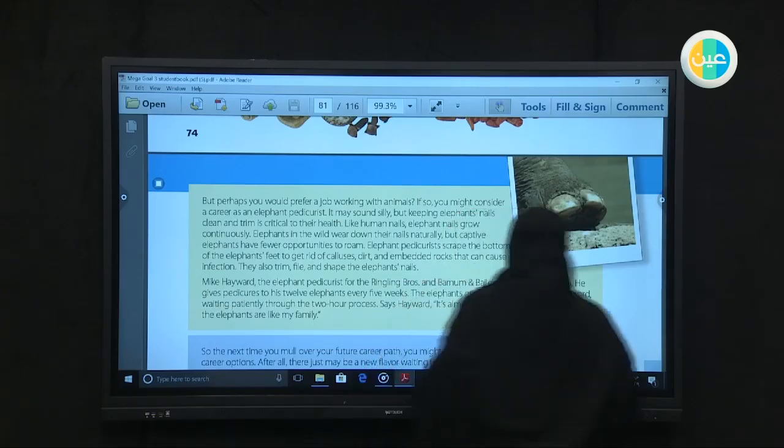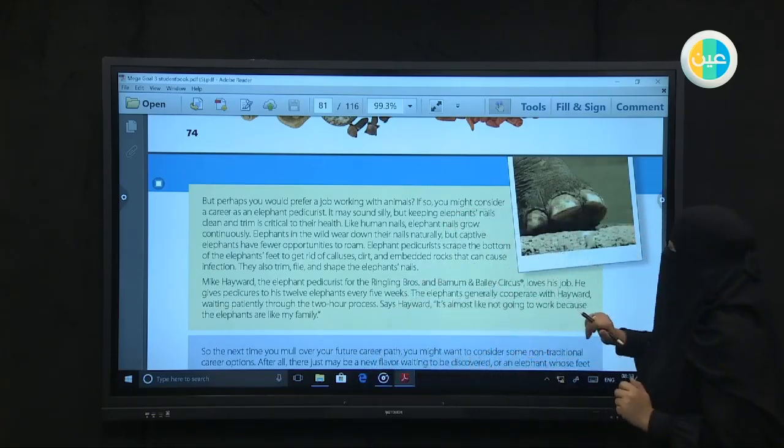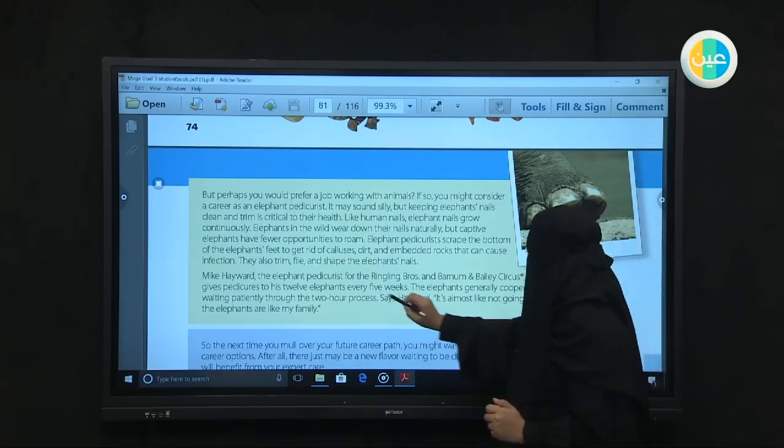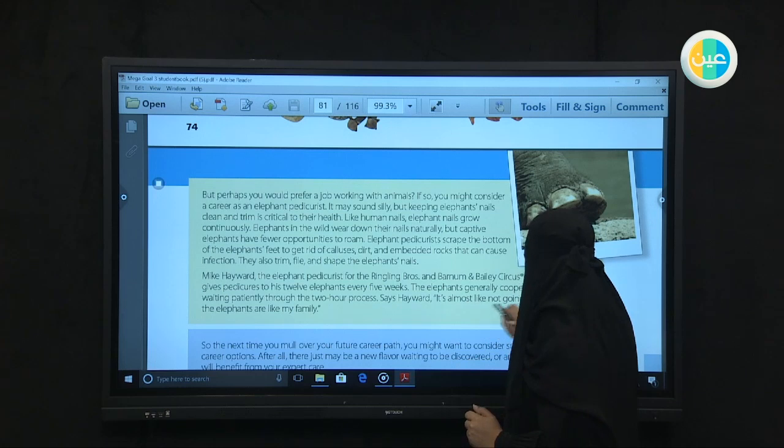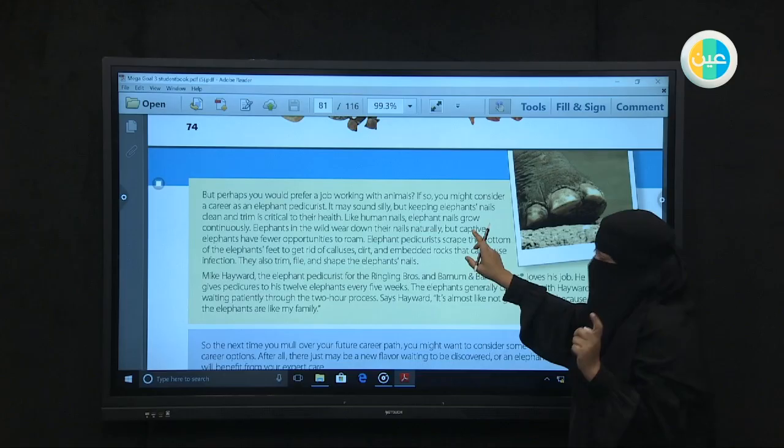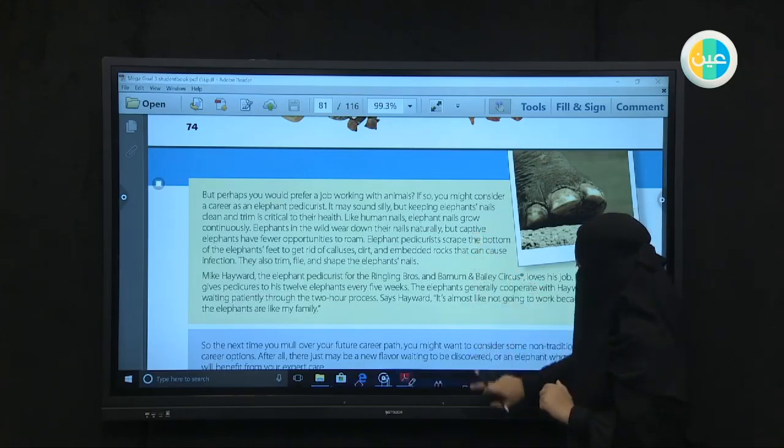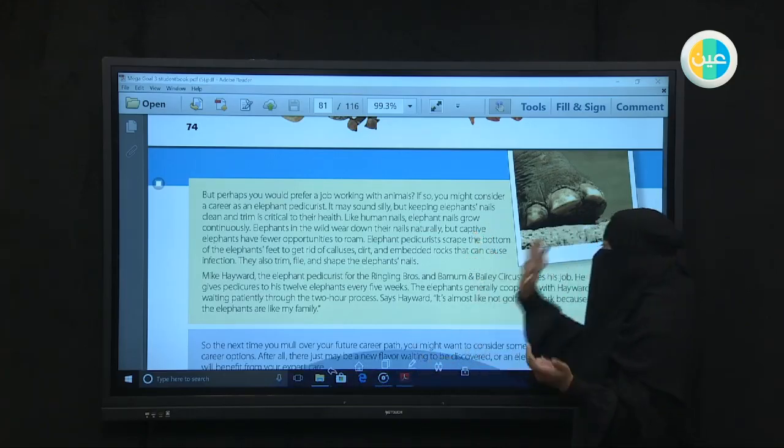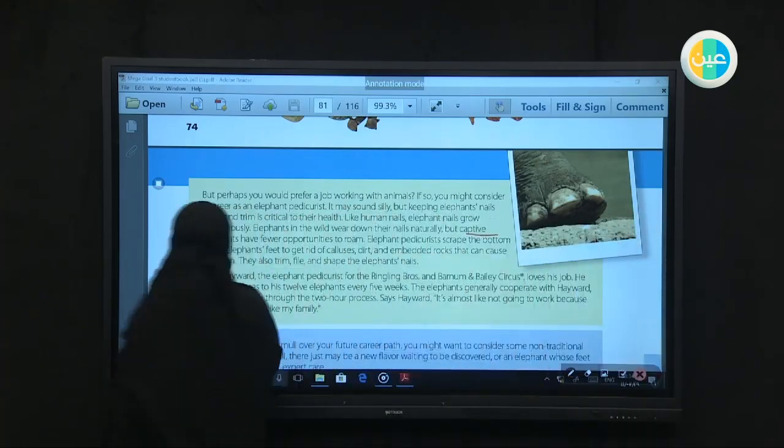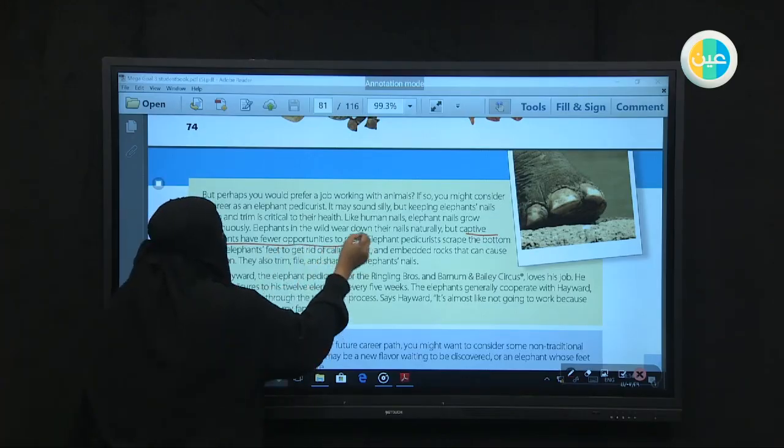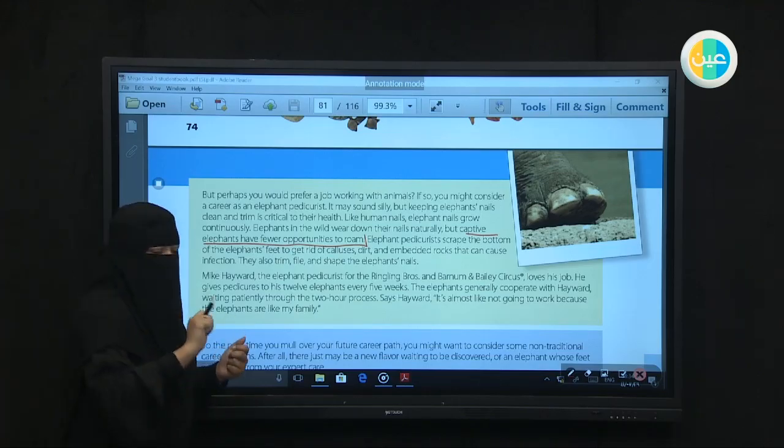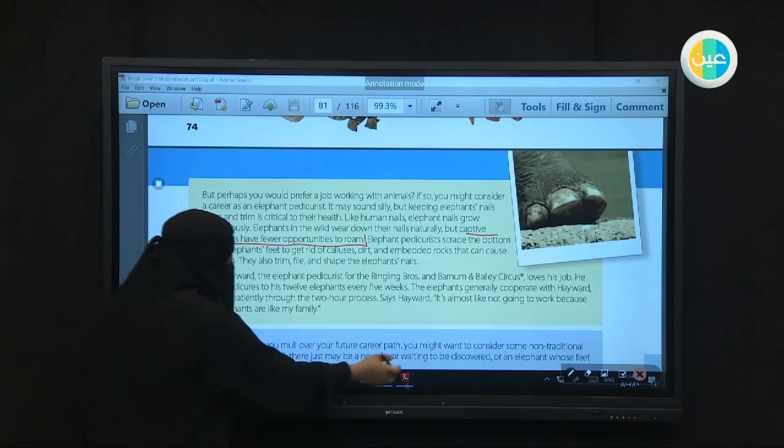Your last question: Why is it important to give pedicures to captive elephants? Why is it important? The elephants in the zoo that are captured from nature - they're not free in their life or in the forest or in the wild in the nature they're in. Now it is important - why? There is probably a good reason here. Let's see - why would it be important? Because captive elephants have fewer opportunities to roam. They can't really walk very far. So they need a chance, they need somebody to help them scrape and clean their nails.